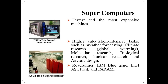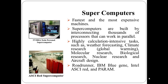The next type of computer is supercomputer. Supercomputers are the fastest and most expensive machines. They have high processing speed compared to other computers. The speed of a supercomputer is generally measured in flops, that is floating point operations per second. Some of the fastest supercomputers can perform trillions of calculations per second. Supercomputers are built by interconnecting thousands of processors that can work in parallel. They are used for highly calculation-intensive tasks such as weather forecasting, climate research, global warming, molecular research, biological research, nuclear research, and aircraft design. They are also used in major universities, military agencies, and scientific research laboratories.